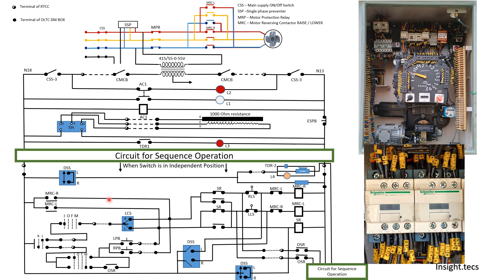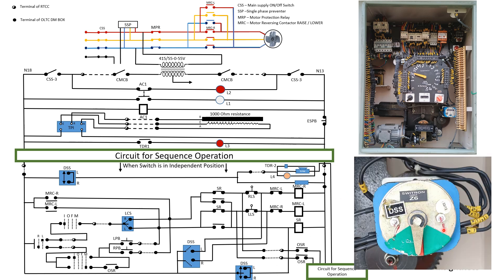Now we have discussed turning on the tap position change. How will the process be turned off? Say we started raising the tap position from 2 to 3 — it has raised, but when it reaches tap position number 3, how will it stop there? For that we have this switch called DSS. This is a very special provision and we will discuss the DSS switch in further detail in the next video. It is responsible for stopping the tap at a position once it has changed.